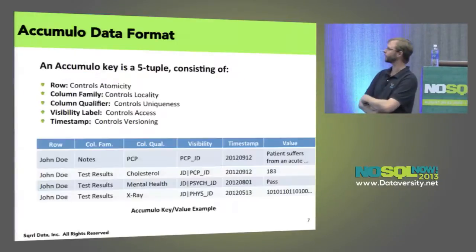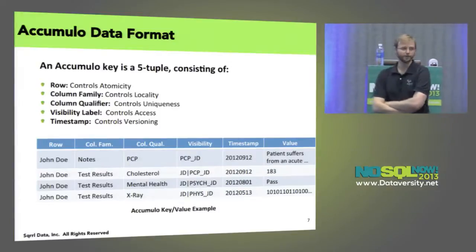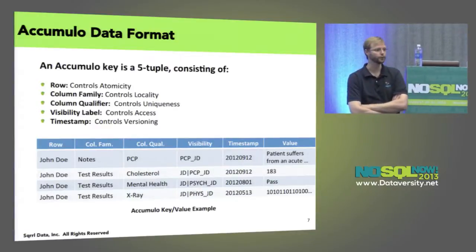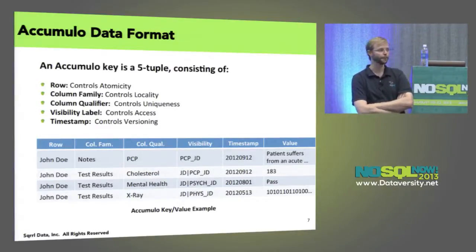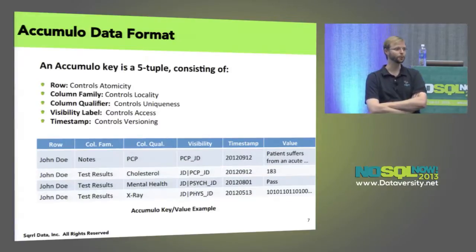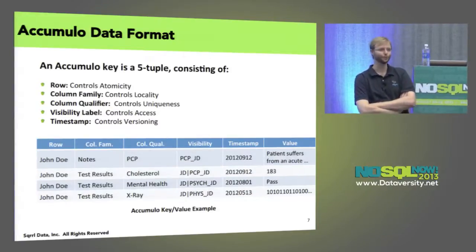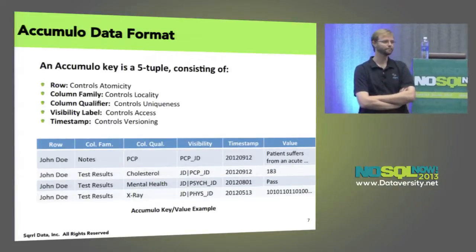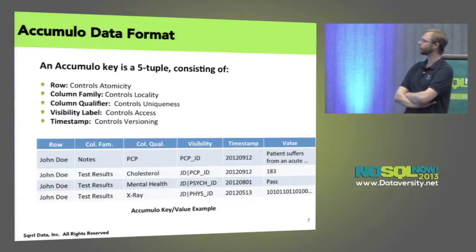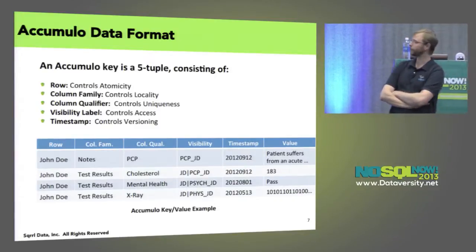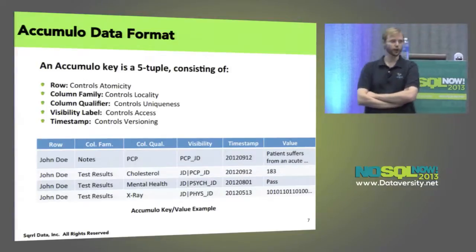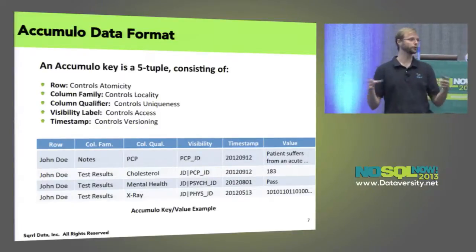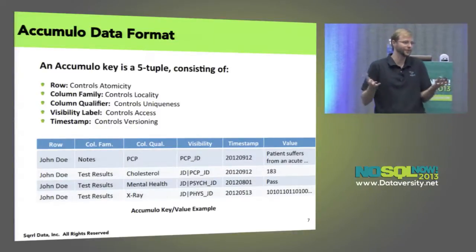So let me dive deep into what Accumulo is. For the most part, Accumulo is a sorted key-value store derived from Google's Big Table paper. There are a bunch of Big Table clones out there — it's in the category of HBase and similar to Cassandra in some ways. But really what we're storing is sorted key-value pairs. A key in this case is a structured element. We're trying to take Hadoop and provide some structured interaction with it — that's kind of the general space of NoSQL.